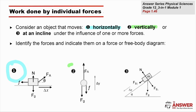The object could also be suspended vertically, moving up or down, held by a cable, a rope, or a string. And then we have the object on an inclined plane, moving up or down that slope, with those forces acting upon it.